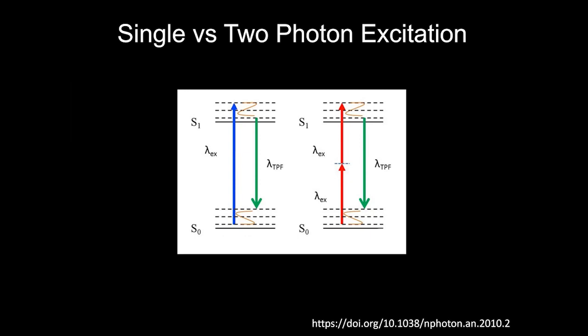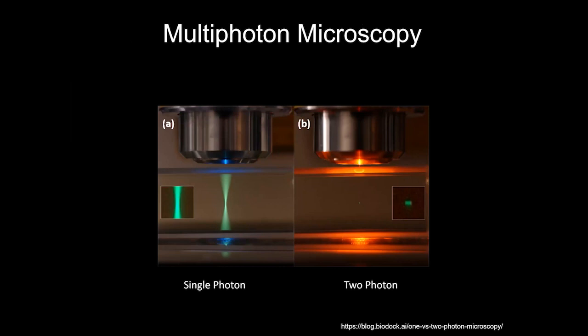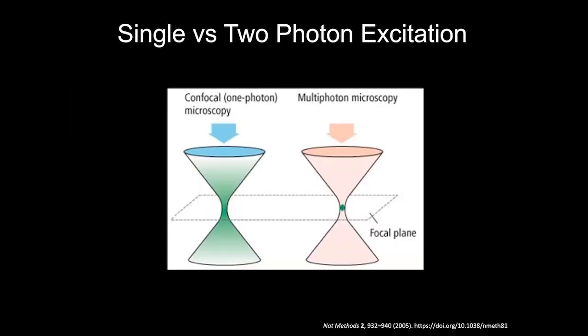So emission curves for 1P versus 2P are the same; it's the excitation that can be very different. The key reason we go to this trouble is what the excitation actually looks like. In single-photon excitation, a green laser excites everything in the light path — above and below the focal plane. With two-photon microscopy, the excitation beam only excites at the focal point, because light coming out of the objective forms an hourglass shape and only at the center, where photon density is highest, does excitation occur.